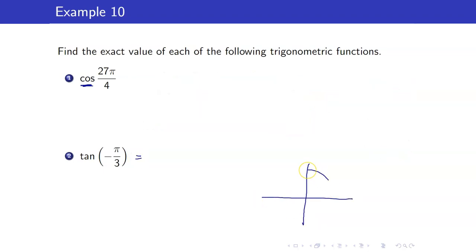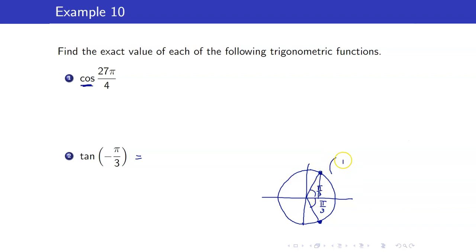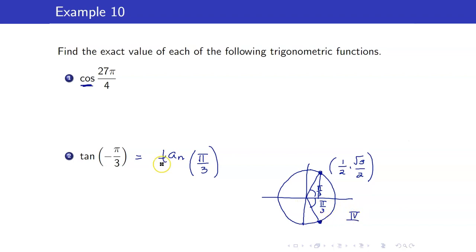For tangent of -π/3: going clockwise by π/3 puts us in quadrant 4 with reference angle π/3. The unit circle point for π/3 is (1/2, √3/2). Since tangent is negative in quadrant 4, tangent of -π/3 = -√3.